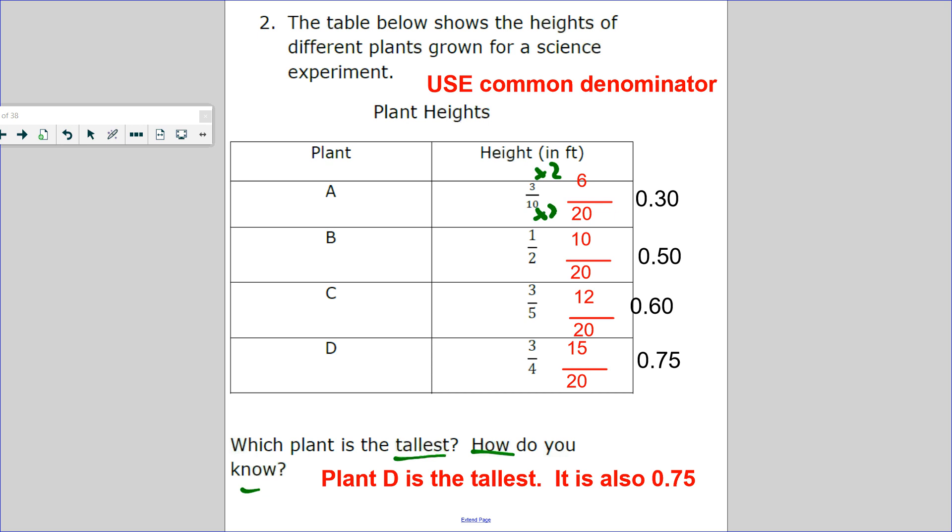How do you build 10 to 20? Times 2, so 6/10 becomes 12/20. 2 to 20? Times 10, so 1/20. 5 to 20? Times 4, so 12/20. 4 to 20? Times 5, so 15/20. This number is the greatest fraction.